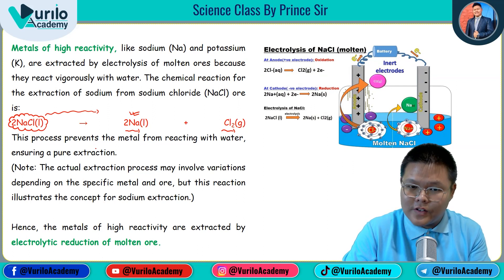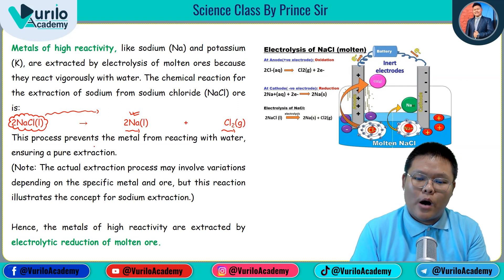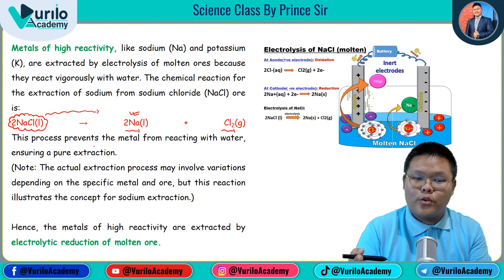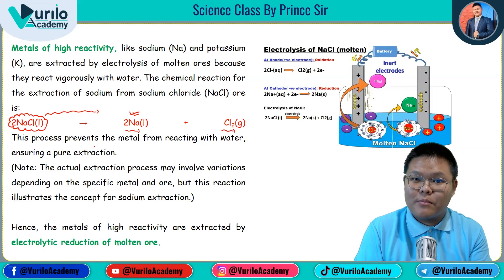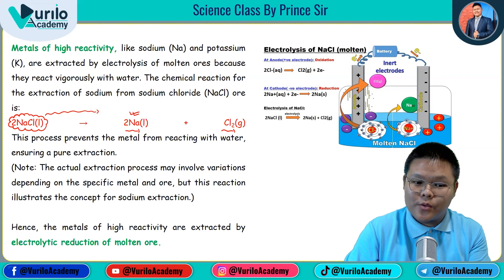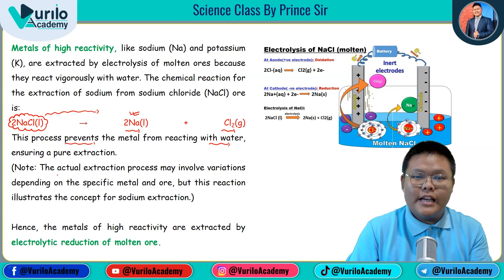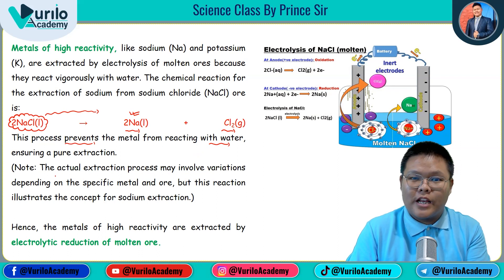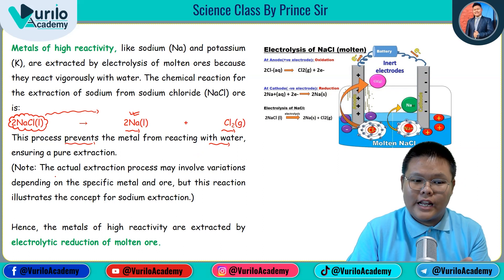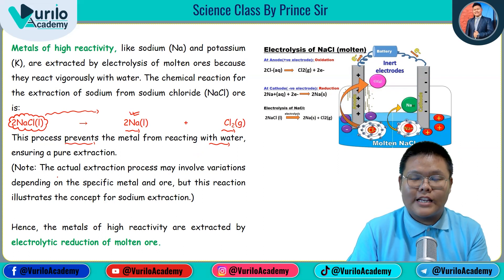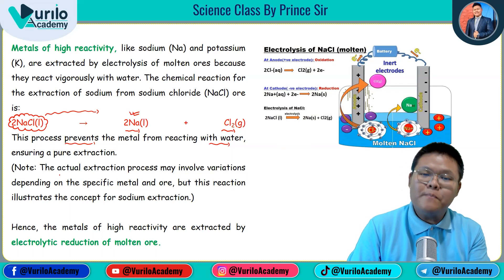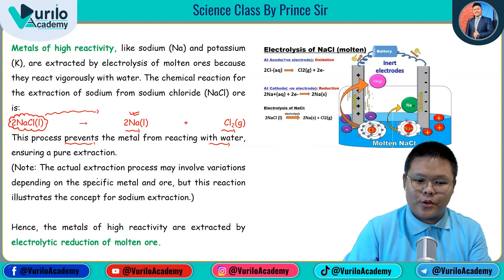Electrolysis is used because other methods are not sufficient for highly reactive metals. An important point: these highly reactive metals, when they come into contact with water, cause an exothermic reaction — producing heat and fire. Therefore, electrolysis is used because this process prevents the metal from reacting with water during extraction, allowing us to extract pure metal safely.